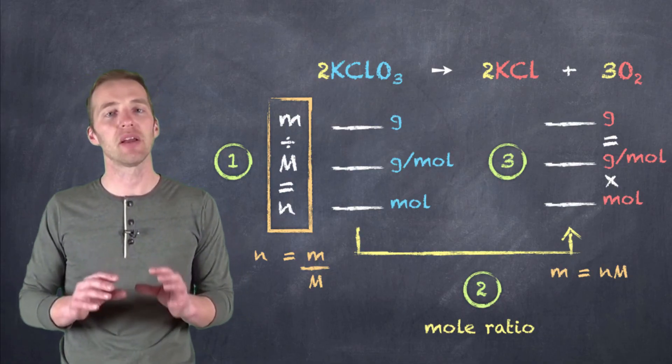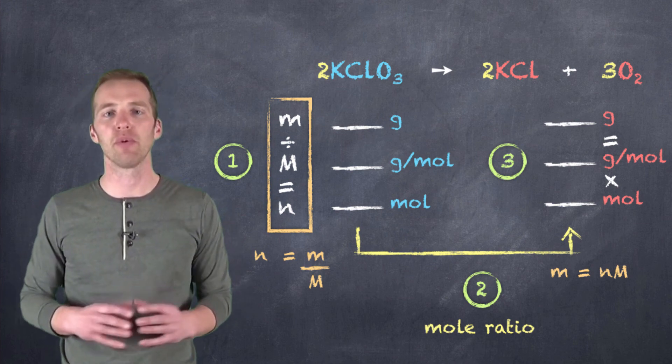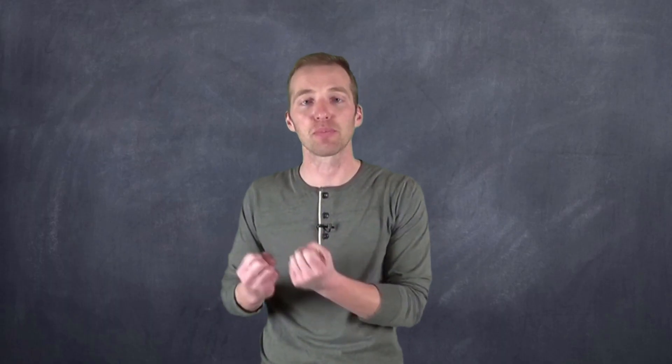Hopefully this video has given you an introduction to what stoichiometry is and how it helps us in chemistry. Ultimately, it allows us to figure out how much product is going to be produced from reacting amounts of reactants, and it lets us know prior to the reaction how much we should expect — which allows us to evaluate how successful and efficient our reaction was. This is one of the most crucial calculations you're going to do in your introductory chemistry courses, so practice, practice, practice, and try to become a pro at stoichiometry. Thanks for watching.